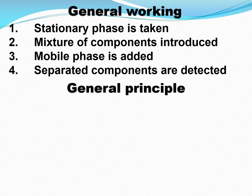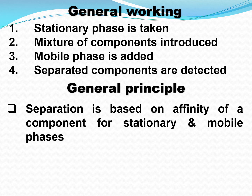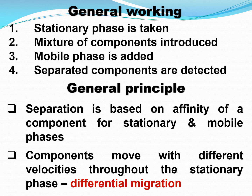The general principle is based on the affinity of a component for the stationary and mobile phase. For example, if you are separating a mixture of colors using chalk powder as the stationary phase and water as the mobile phase, each color will have an affinity for both chalk powder and water. Based on this relative affinity, the components move with different velocities throughout the stationary phase. If a component has more affinity for the mobile phase, it will move faster; if it has more affinity for the stationary phase, it will move slower.